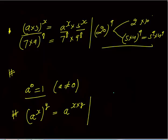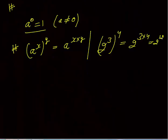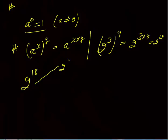For example, if I say 2 power 3, raised to power 4, this equals 2 power 3 into 4, that is 2 raised to power 12 — whenever the bracket is opened, the powers get multiplied. Conversely, if 2 raised to power 18 is given, you can write it as 2 power 9, raised to power 2, or as 2 power 3, raised to power 6, since 3 into 6 is 18 and 9 into 2 is also 18.